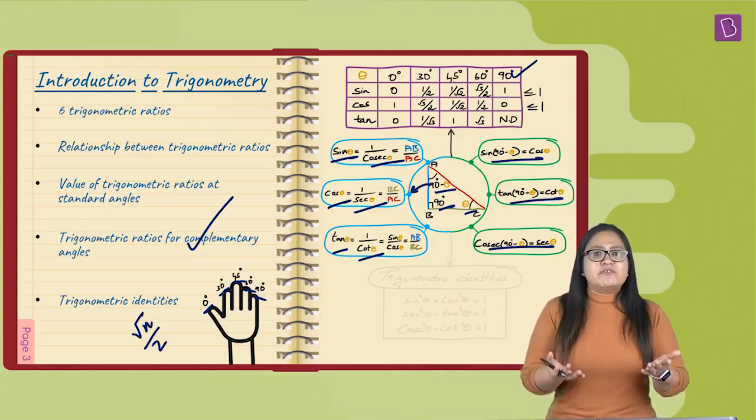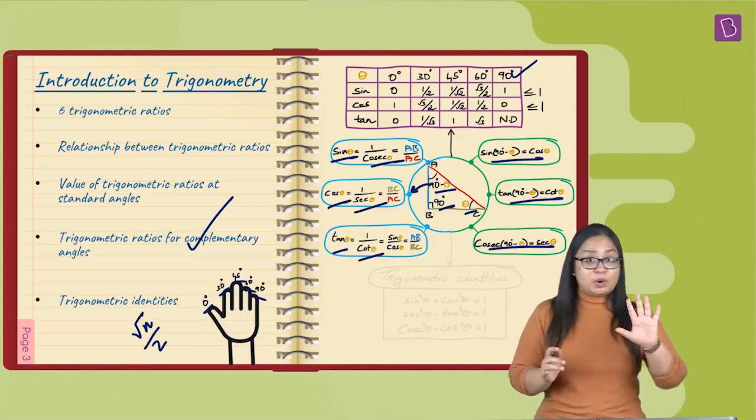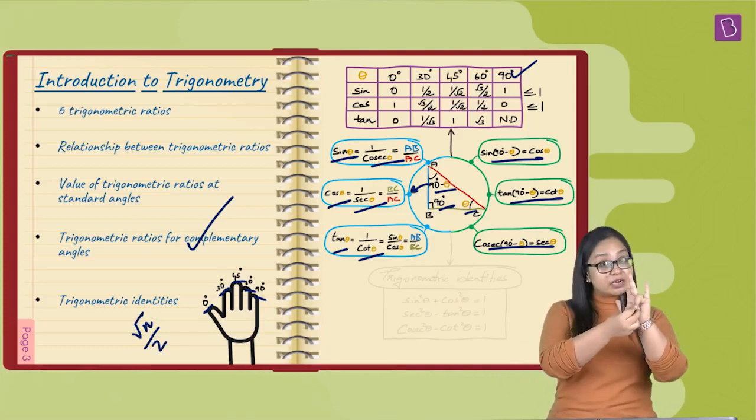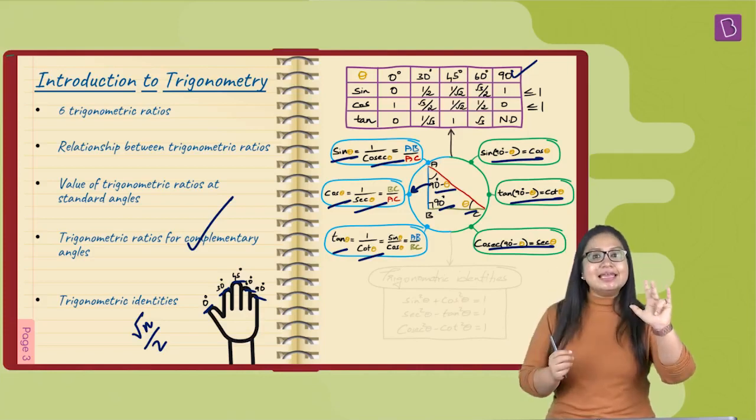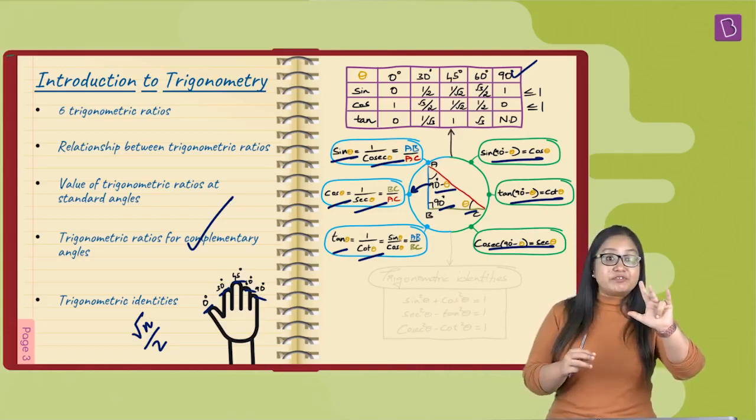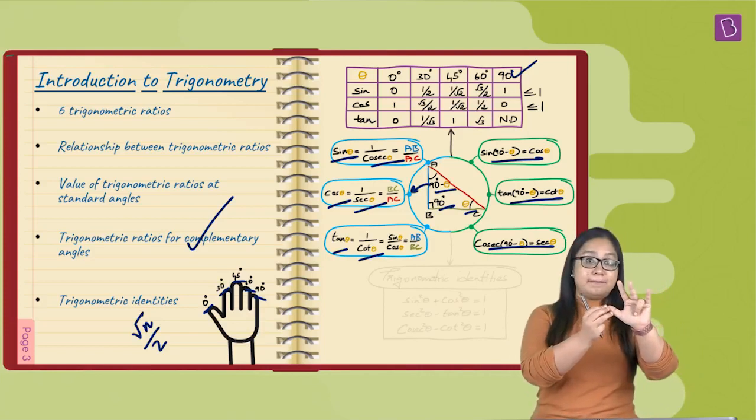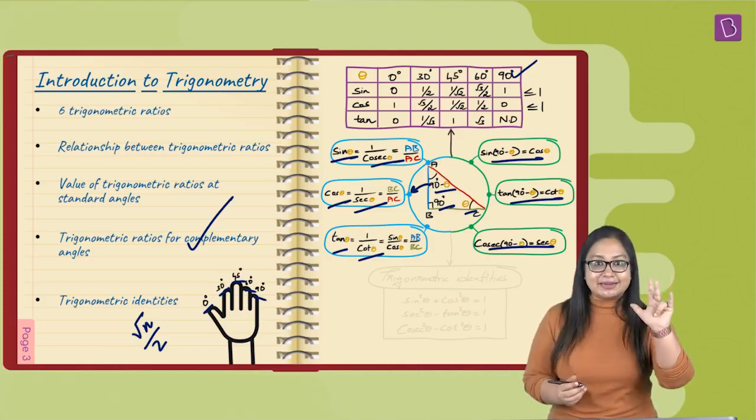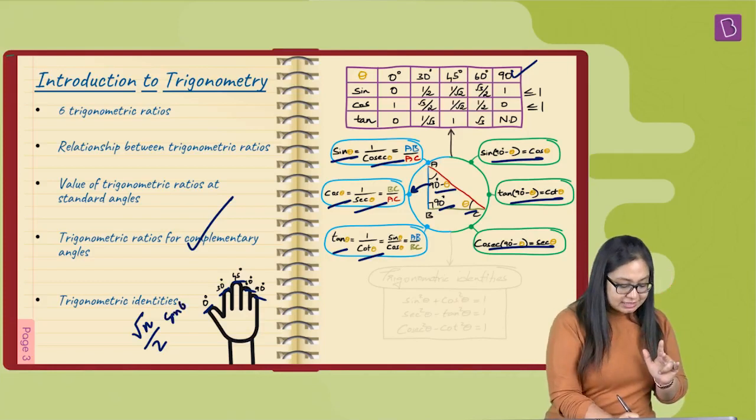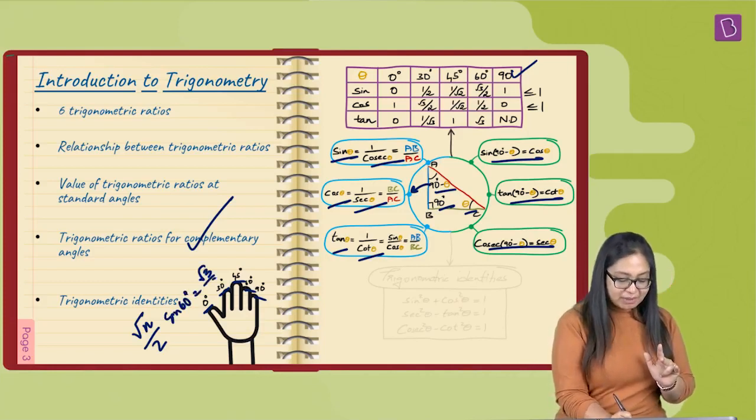You pull down the finger of 60 degrees and then n will be the number of fingers towards the thumb including the thumb. So, here you've got 3. So, sine 60 degrees is root 3 by 2.